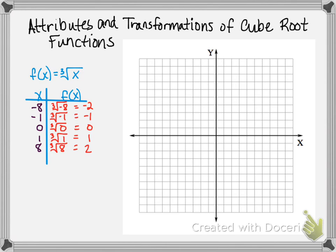Let's plot these points on a coordinate plane: negative 8, negative 2; negative 1, negative 1; 0, 0; 1, 1; 8, 2. And we can sketch in our cube root function.